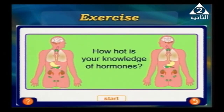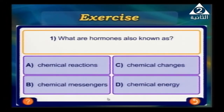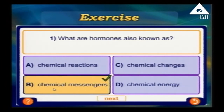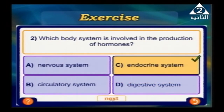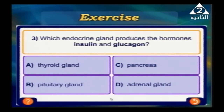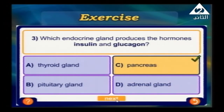Let's do some exercises to test your knowledge about hormones. What is a hormone? It is also known as a chemical messenger. Hormones are chemical messages sent from the endocrine glands to all parts of the body. Which body system is involved with the production of hormones? The endocrine system. Which endocrine gland produces insulin and glucagon? The pancreas — excellent!